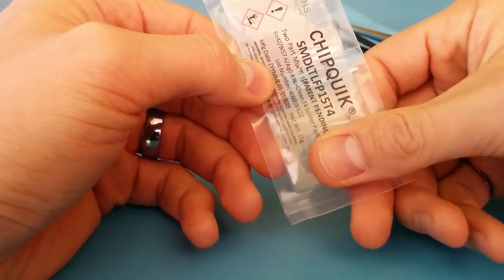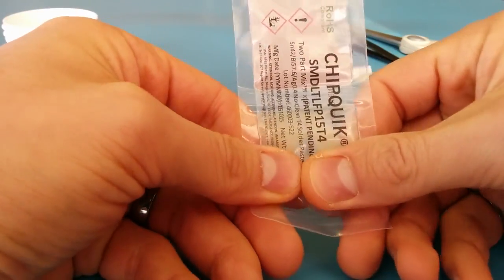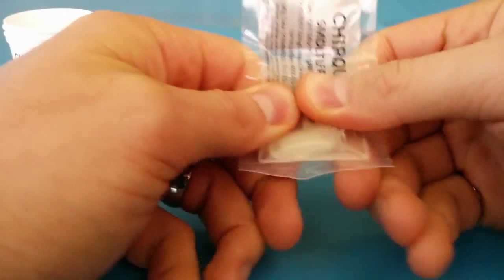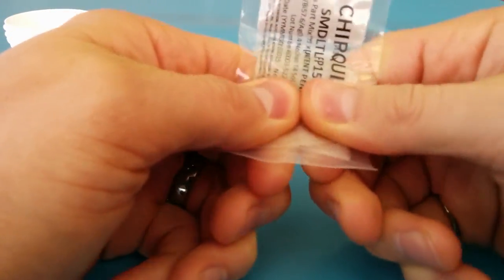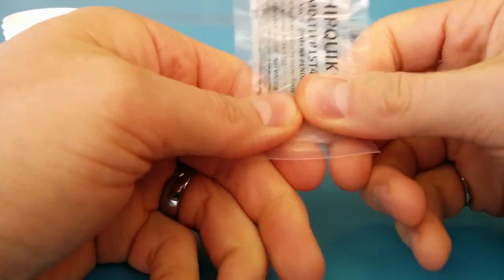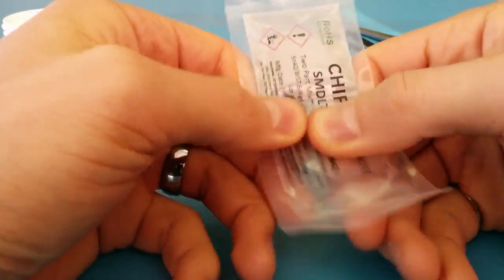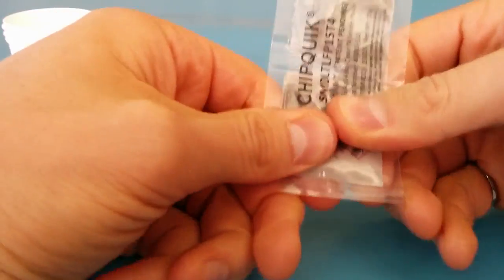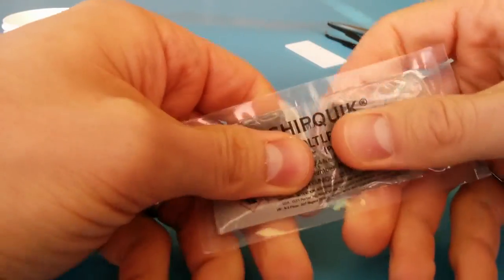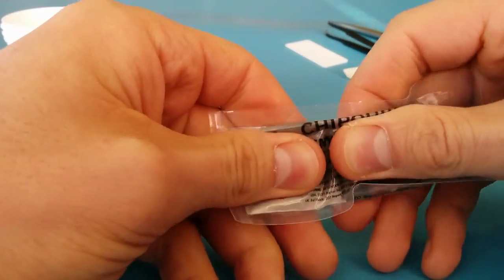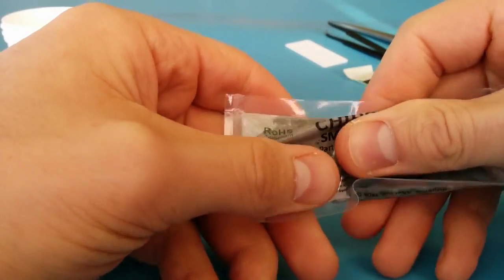To mix the paste you squeeze the flux towards the powder and it causes the internal burst seal to rupture. You can squeeze it back and forth, then massage the bag a little bit in the middle to get the seal to fully release.